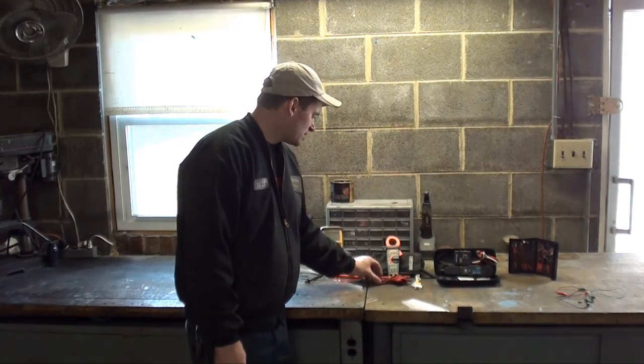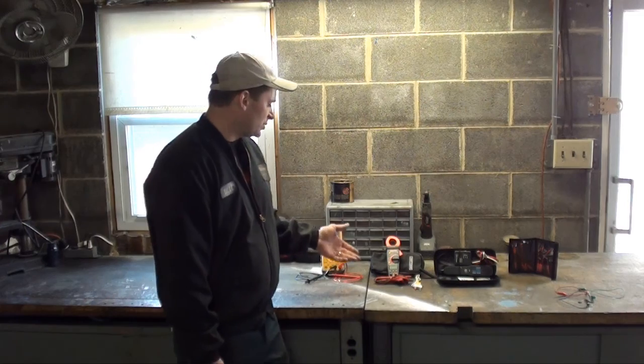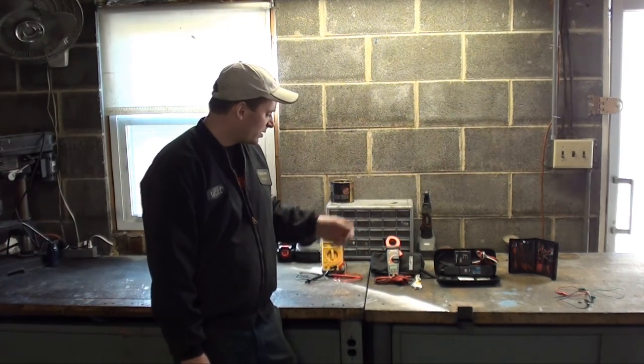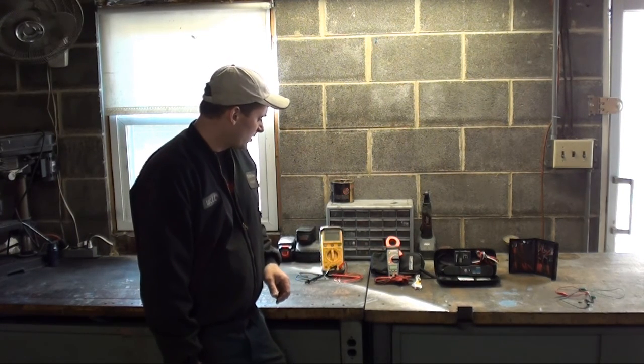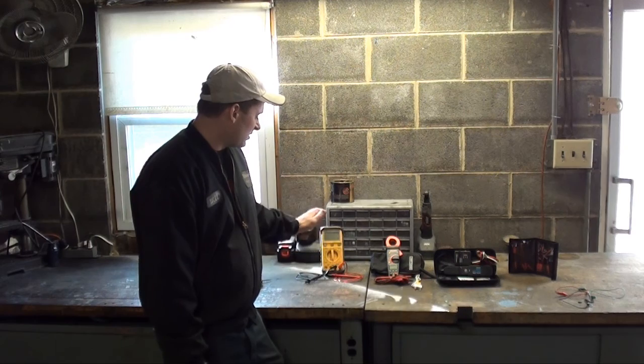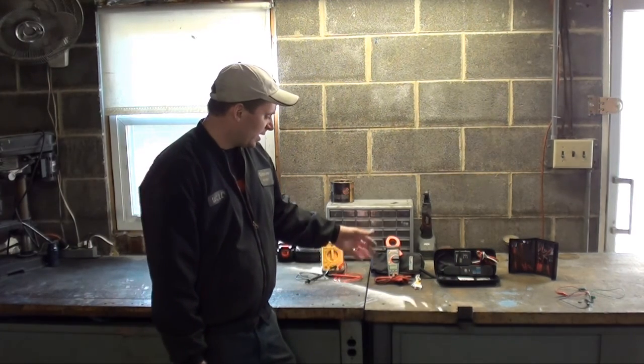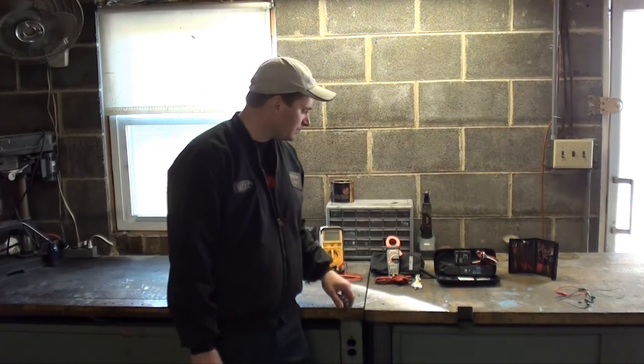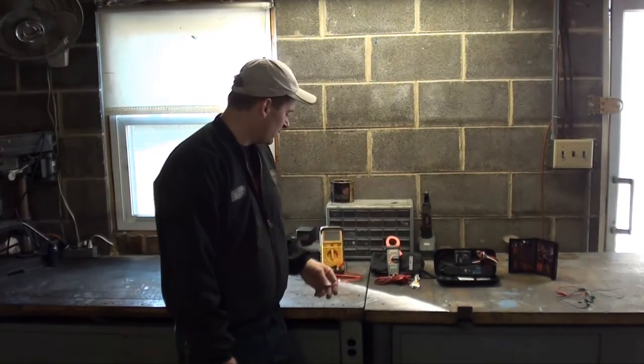On to this meter. This here is a clamp style amp meter. This one will do DC and AC amps, along with everything else that this thing will do. That actually does a couple things more. But this thing has other beneficial points too. But yeah, that's pretty much a DVOM, an amp clamp meter all in one.